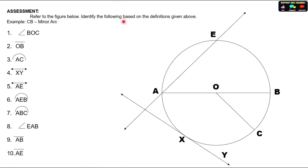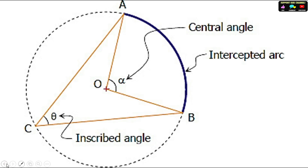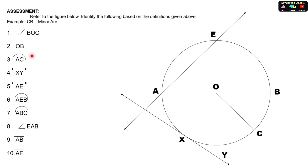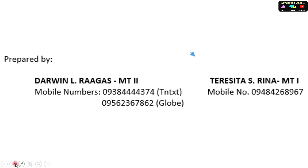For your assessment, refer to the figure below. Identify each element: if it is an angle, use the angle symbol; if it is a chord, use the chord symbol; if it is an arc, use the arc symbol; and determine whether each line is a tangent line or a secant line — if it has an arrowhead, it is a line. For example, CB is a minor arc. Identify what class of angle BOC belongs to, and so on and so forth.